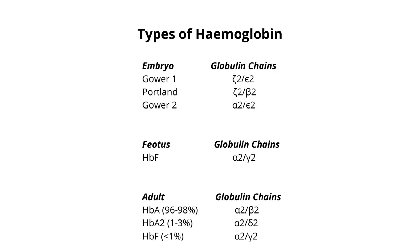The different types of hemoglobin molecules found in the embryo are Gower-1, Portland, and Gower-2. In the fetus, hemoglobin F is found. Whereas in the adult, hemoglobin A, hemoglobin A2, and hemoglobin F are found.